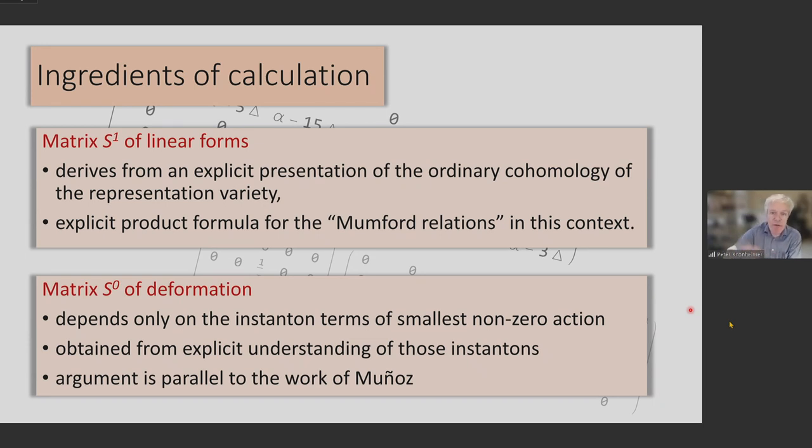As I said earlier, this is really parallel to work of Munoz. The matrix S0, that's the instanton deformation and the local coefficient deformation. By a small miracle of the obvious algebraic geometry, and these just these coordinates on the Hilbert scheme, you can completely understand S0 only if you understand just the next lowest term in the relations. And that just depends on the instanton moduli spaces of smallest non-zero action. So those were just the ingredients of the calculation which led to this very explicit form of the description of the instanton cohomology ring.